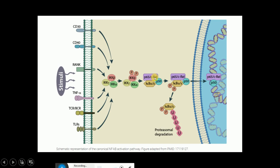P65, c-REL, and P50 are in association with IKBα/ε. The phosphorylated IKKβ of the IKK complex then phosphorylates this IKB. Once IKBα/ε is phosphorylated, it is followed by the ubiquitination of this protein. After ubiquitination, IKBα/ε is degraded by the proteasome.